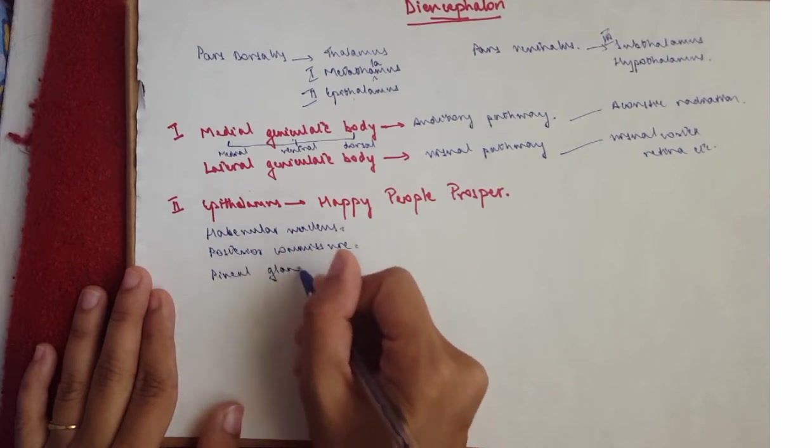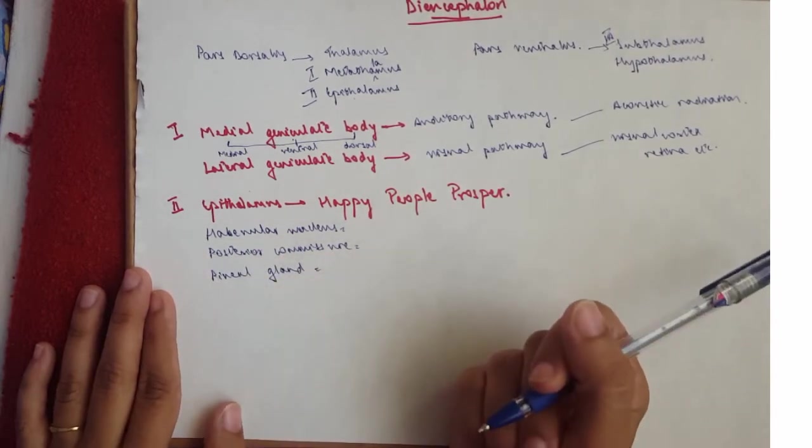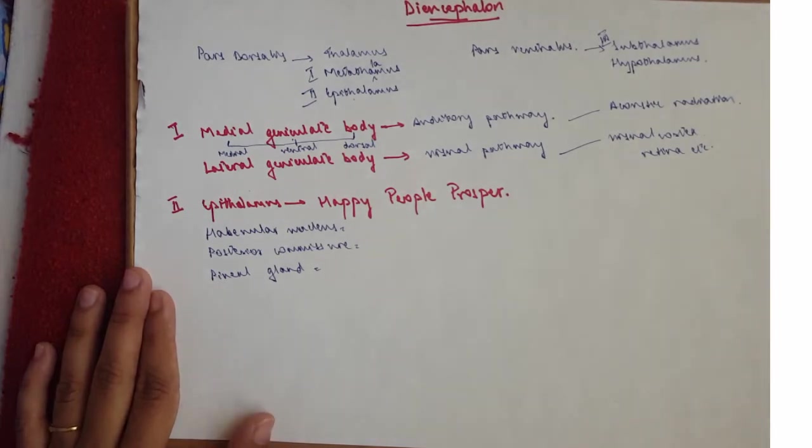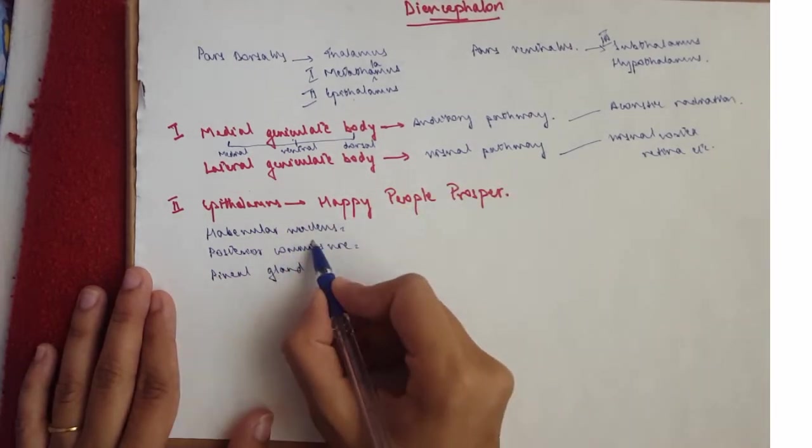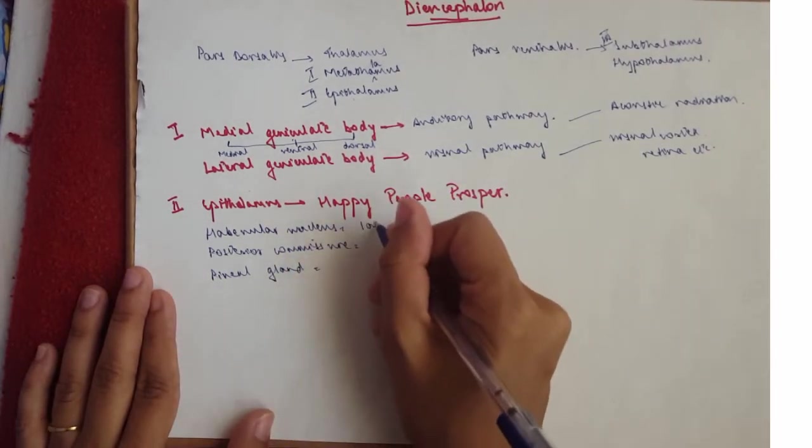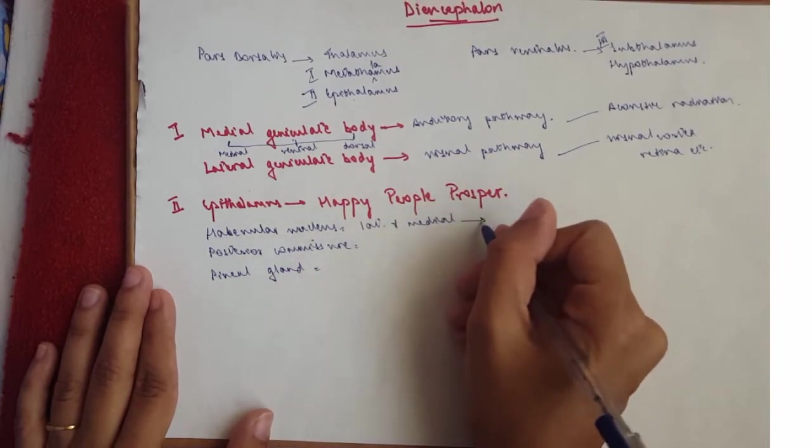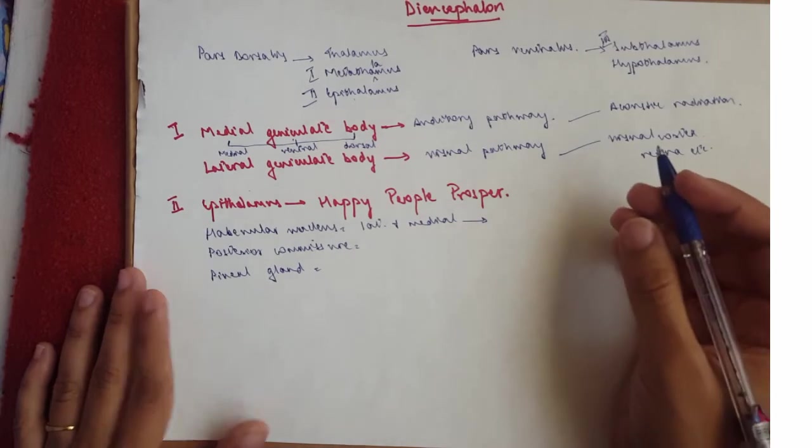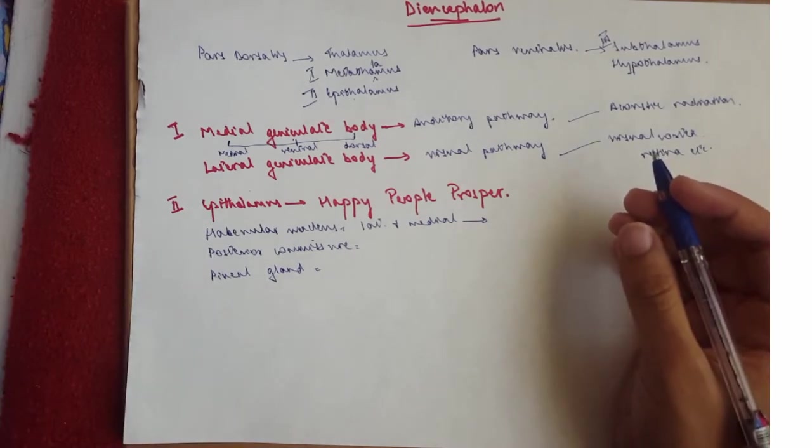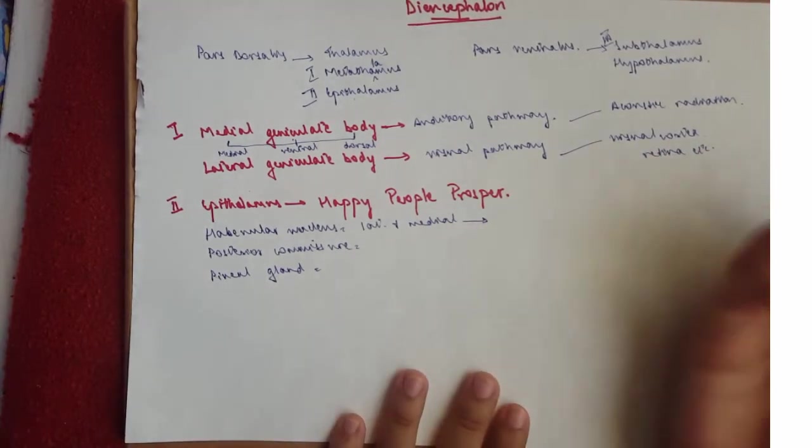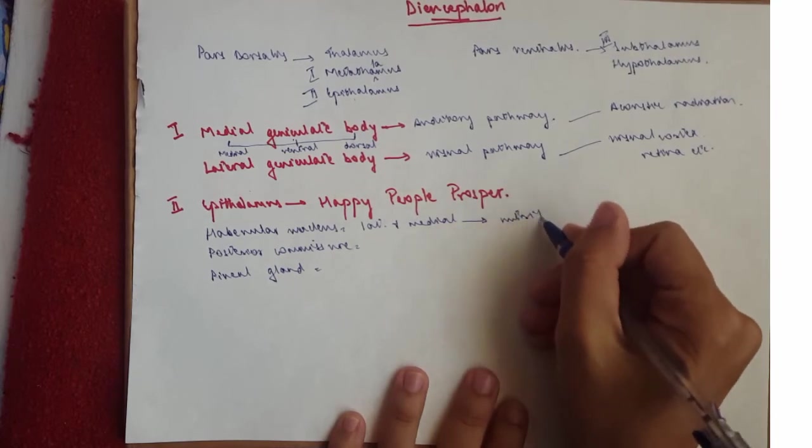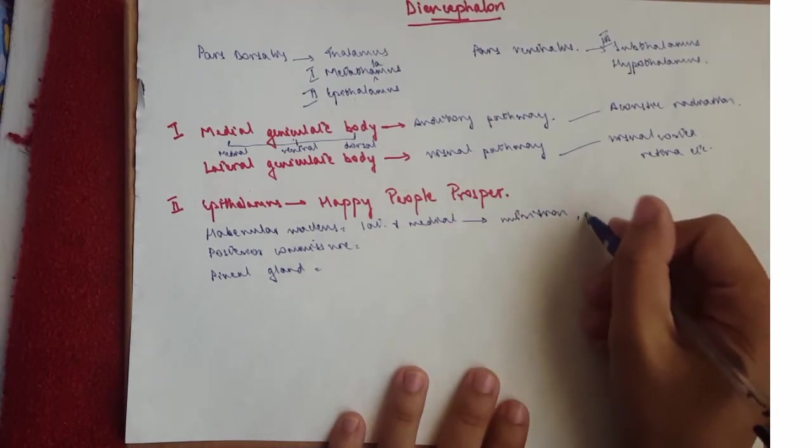So these three structures are important when you talk about the epithalamus. The habenular nucleus has two nuclei: the lateral and the medial nucleus. And it's a region for pain processing, reproductive behavior, nutrition, sleep cycles, etc. So I'm just going to write nutrition and pain processing.